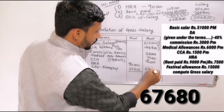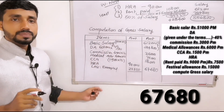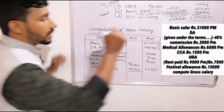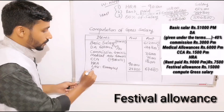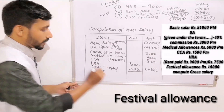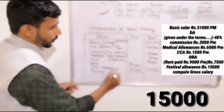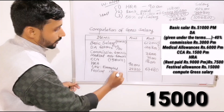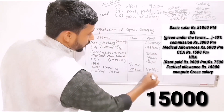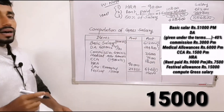The next item is festival allowance. Festival allowance is a fully taxable allowance. The amount is $15,000. It is given directly as an annual amount, so there is no need to multiply by 12.